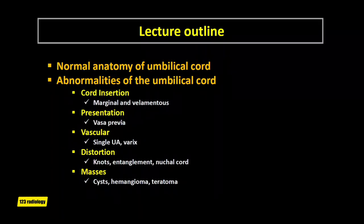Welcome to this lecture about ultrasound of the umbilical cord. I will discuss the normal anatomy of the umbilical cord and structural abnormalities that may be identified during a prenatal ultrasound examination. The umbilical cord abnormalities discussed include cord insertion, presentation, vascular abnormalities, distortion abnormalities, and cord masses.